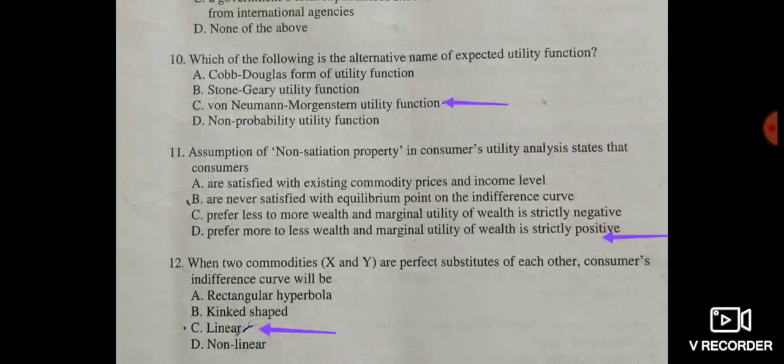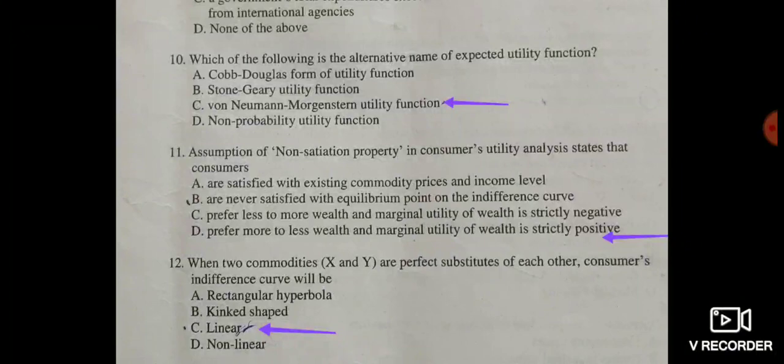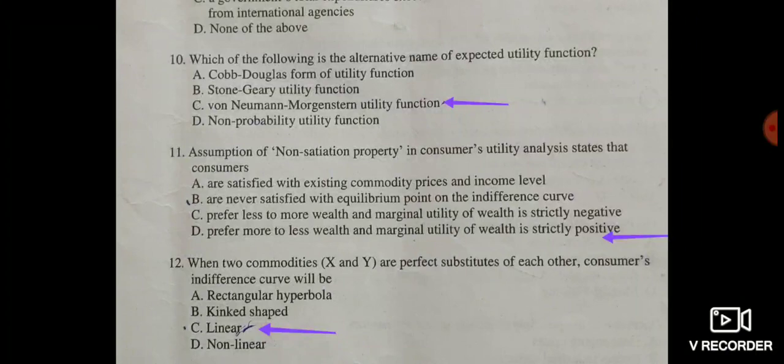Question twelve: when two commodities X and Y are perfect substitutes of each other, the consumer's indifference curve will be — in the case of perfect substitute commodities, the indifference curve becomes a downward-sloping linear straight line. So the correct answer is option C: the indifference curve will be a linear indifference curve.